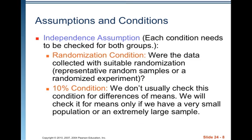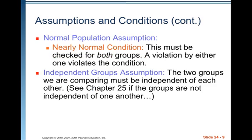Assumptions and conditions — these are always important. We want to assume we have independent groups. Each condition needs to be checked for both groups. First, the data were collected in a suitable randomized fashion: a representative random sample or randomized experiment, checking independence within each group. The 10% condition we don't really worry about with differences in means; we check it only if we have a very small population or an extremely large sample.